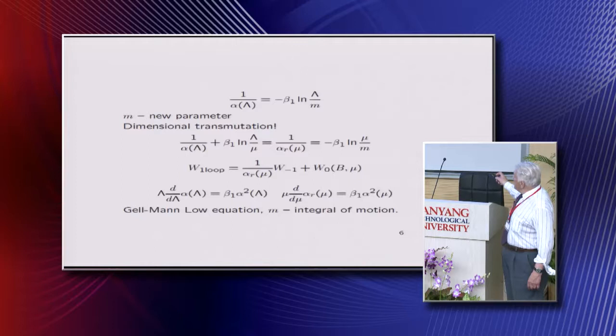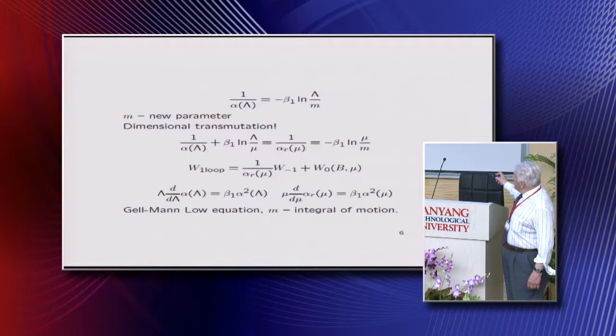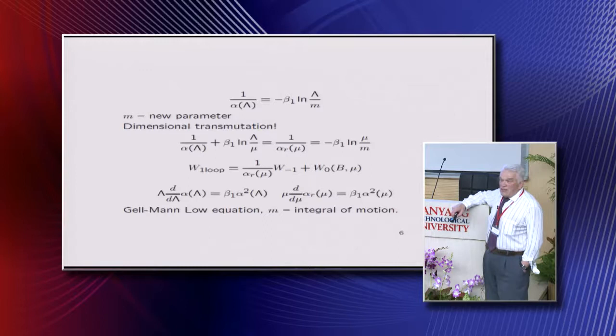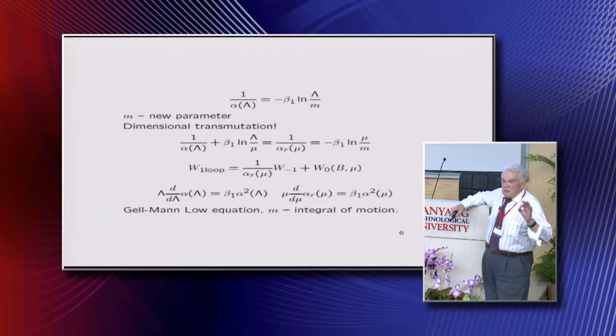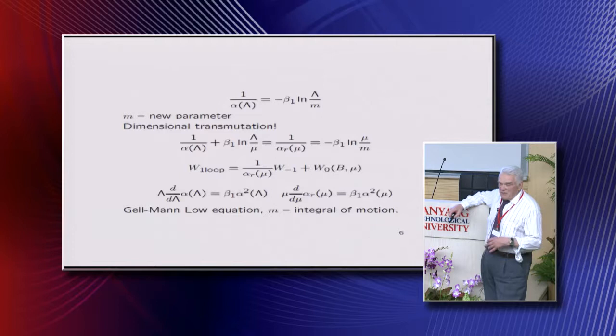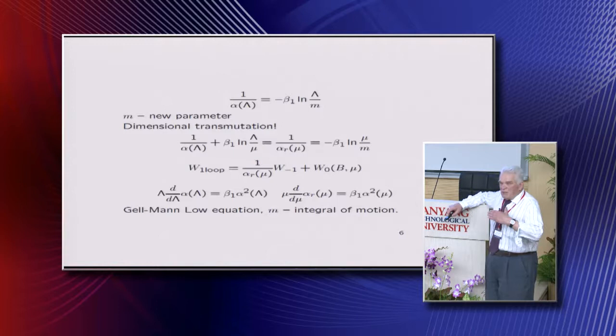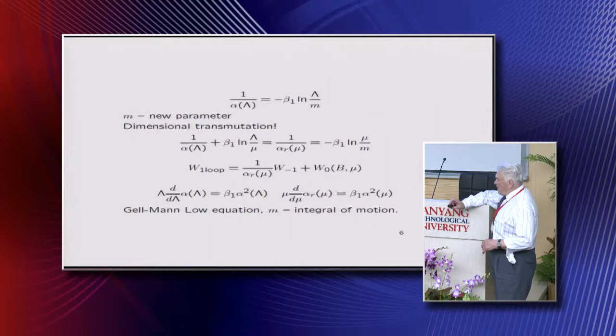But comparing this formula and this, you see that alpha renormalized, which depends on this reference momentum, satisfies the same equation. So in fact, unrenormalized charge alpha of lambda and renormalized charge alpha of mu are two different points on the same trajectory. There is no difference between unrenormalized charge and renormalized charge. This is the feature of Yang-Mills. This is very beautiful feature of Yang-Mills because of this logarithmic divergences.